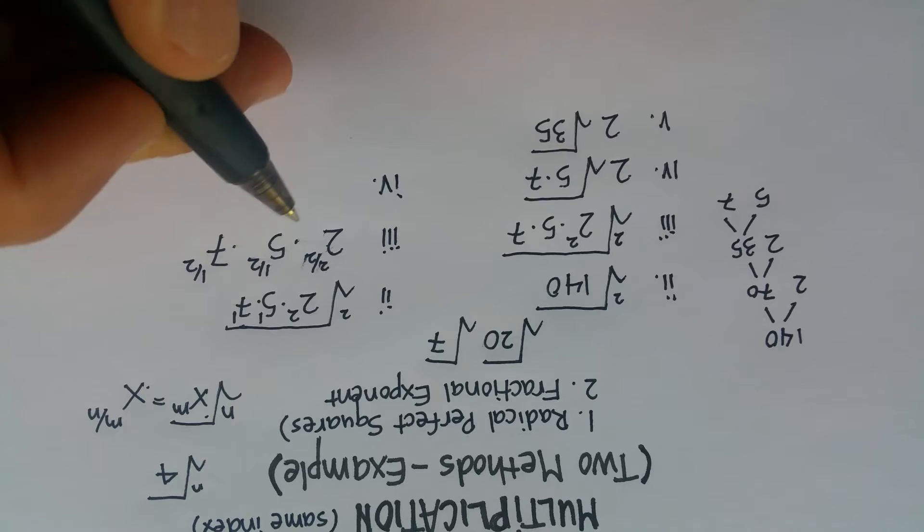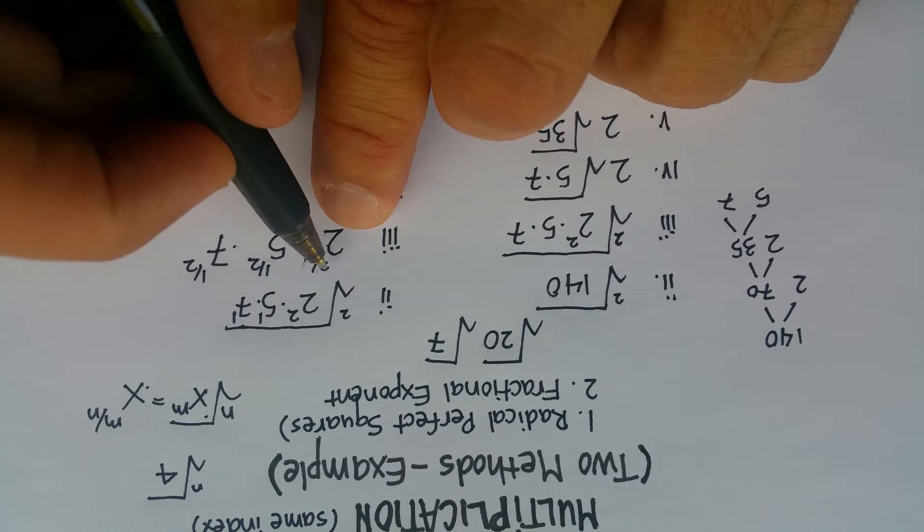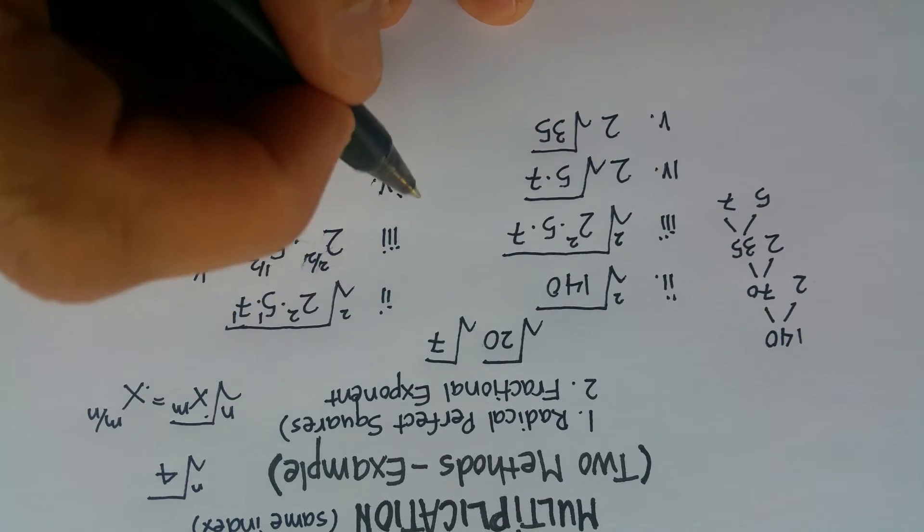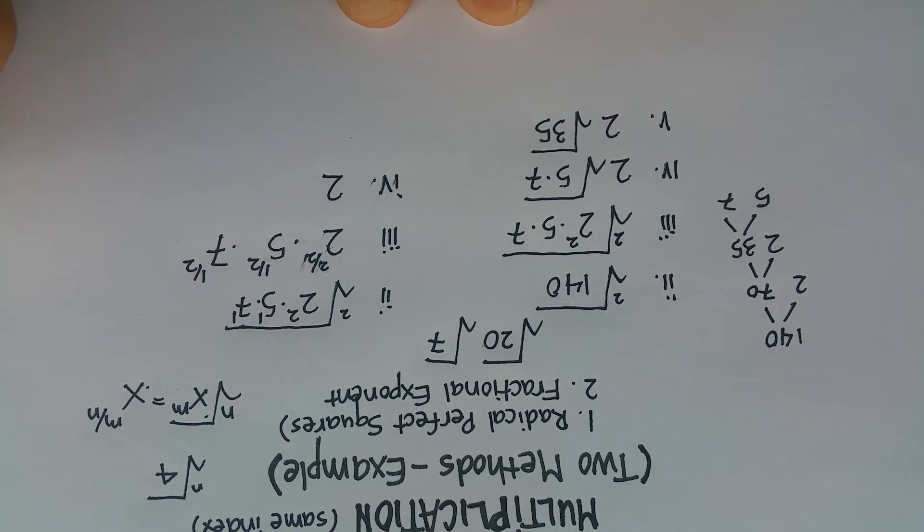Now, the next part in this method is that if you have whole numbers, like 2 over 2 is a whole number, that goes outside the radical. So that's just 2 to the 1.